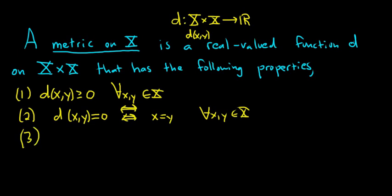Property 3: d(x,y) = d(y,x). The distance between x and y should be the same as the distance between y and x. The distance between 3 and 4 is the same as the distance between 4 and 3. This has to be true for all x,y in X, for all points in the space.